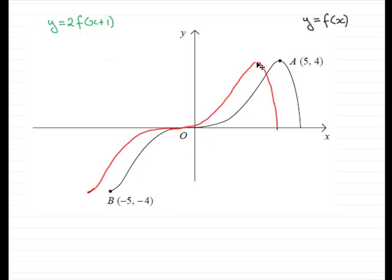This point here for instance will now be at 4 across, 4 up. This point here would be minus 6 units across, 4 units down, with coordinates minus 6, minus 4.